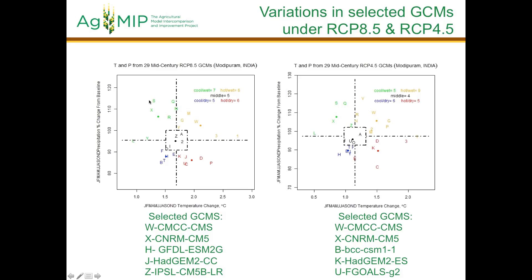So your GCMs seem to differ - you have some differences between RCP 4.5 and RCP 8.5. Now, you're planning on running through your entire integrated assessment with both RCPs, correct? Including going right through the economics?